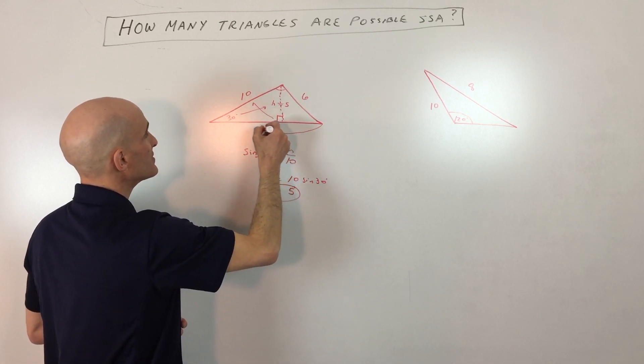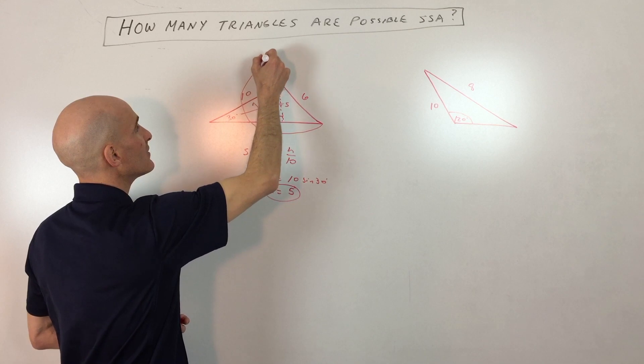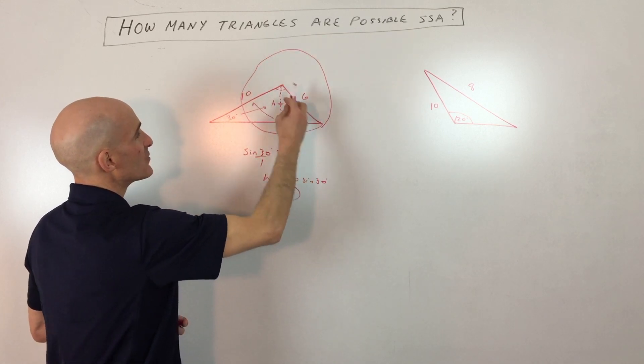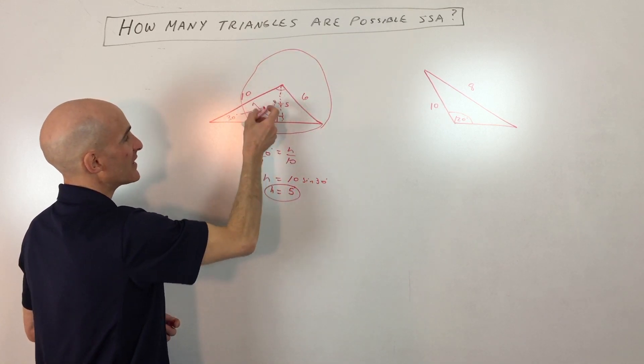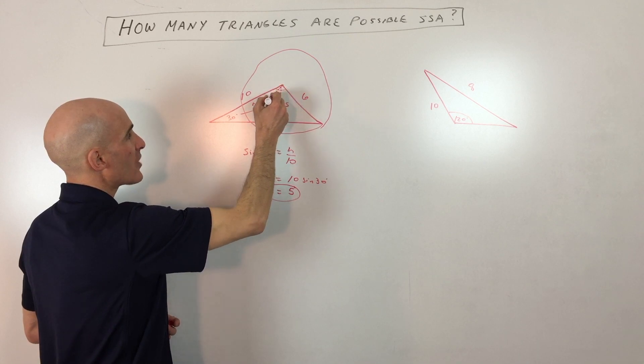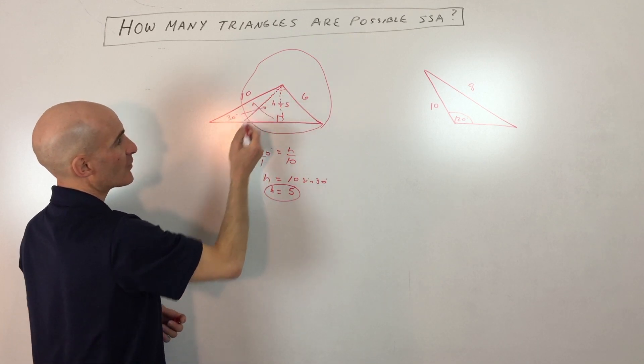Let's draw a circle here, something like that. This is like the center of the circle, and you're rotating it. So really, there could be another triangle that's formed like this.